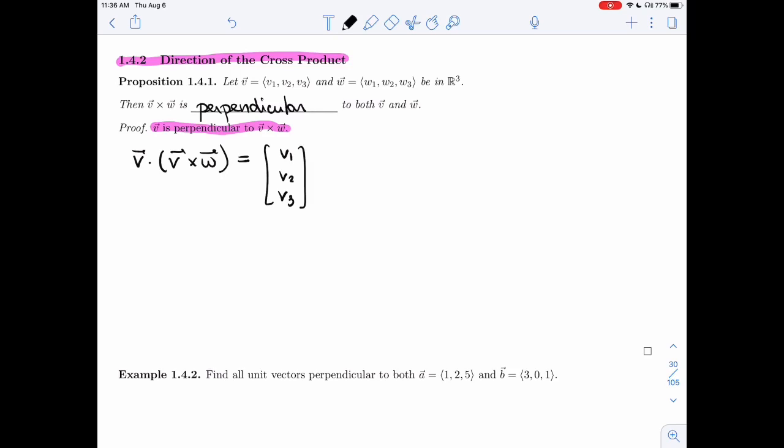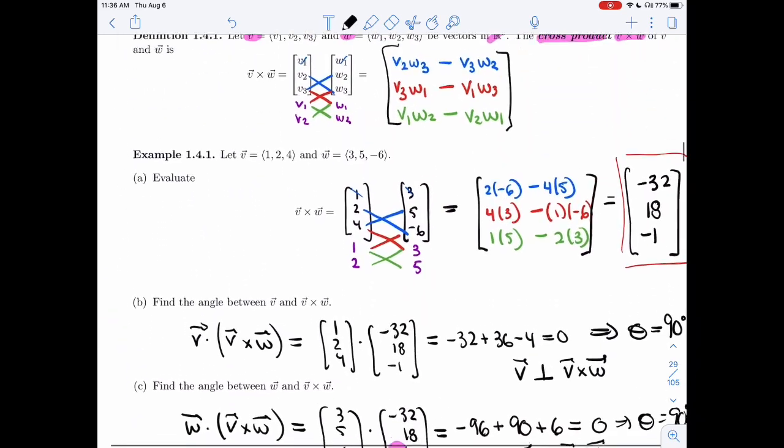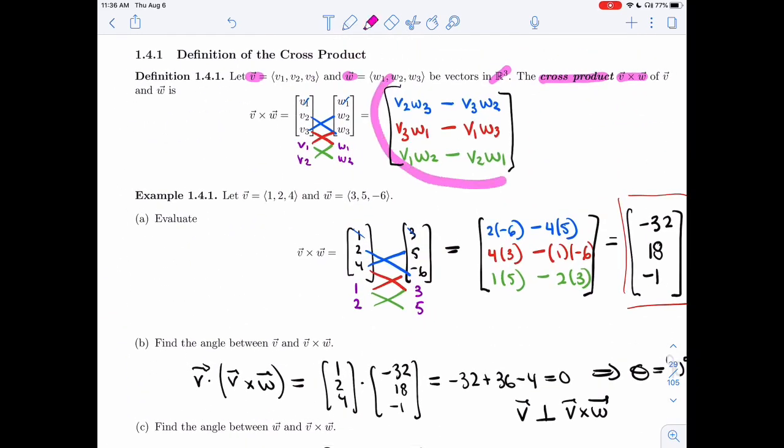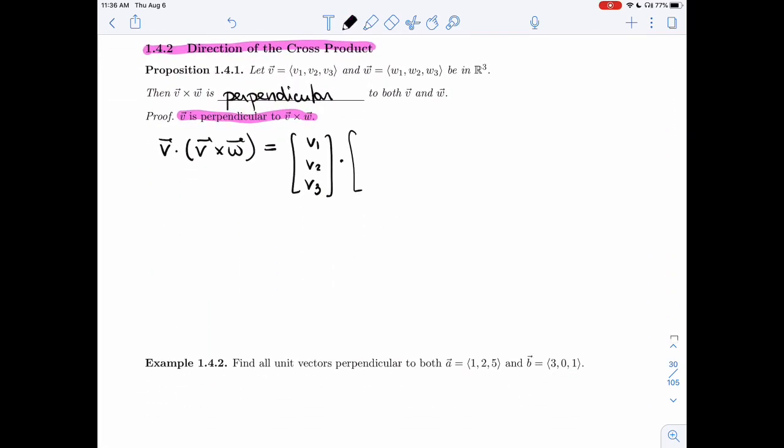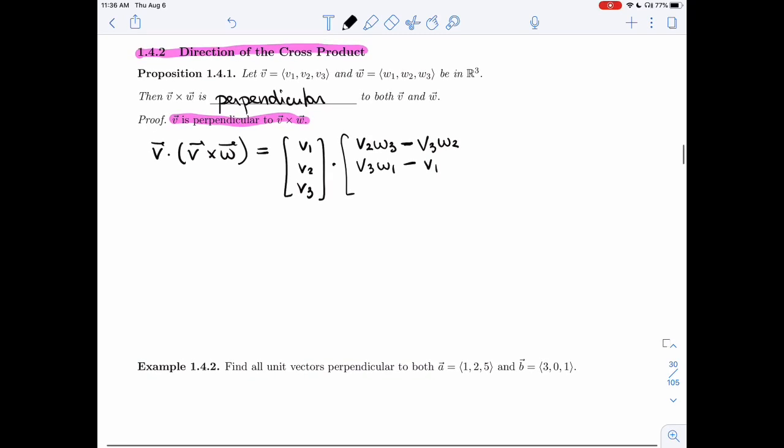So V1, V2, V3, and then we have our definition of the cross product right here. That's what I'll use. And this one, so I have V2 W3 minus V3 W2. I have V3 W1 minus V1 W3, and I have V1 W2 minus V2 W1. So this is the dot product I want to take.